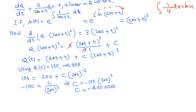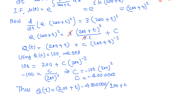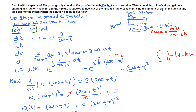Back-substituting C, we have the amount of salt at any time t: q(t) = (200 + t) − 4,000,000 / (200 + t)². To answer the question, we need to find the time when the solution begins to overflow. The tank capacity is 500 gallons, and it originally has 200 gallons, so there is room for 300 more gallons.